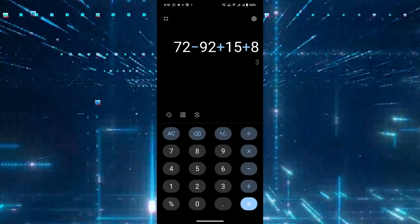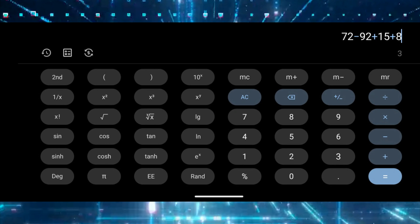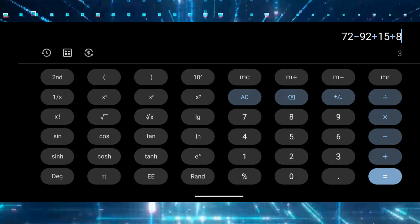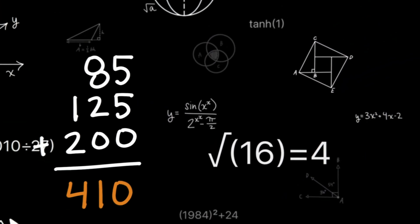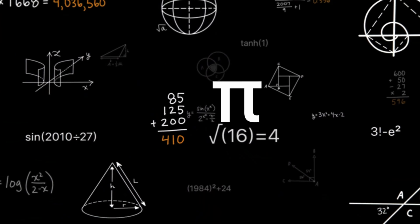We don't know how to use this app. But now, there is a calculator in this button — for example, there is a scientific one or a simple one. In the calculator, there is a conversion.